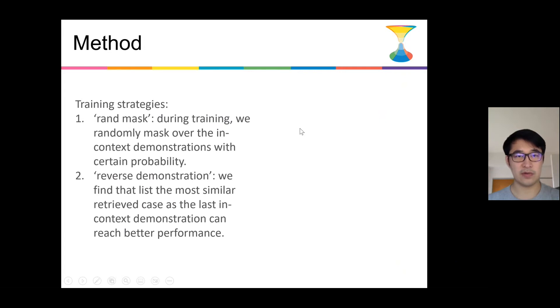We also propose training strategies. The first is random mask, which is that during training, we randomly mask over the in-context demonstrations with certain probability. The second is reverse demonstration, where we found that at least the most similar case as the last in-context demonstration can reach better performance.